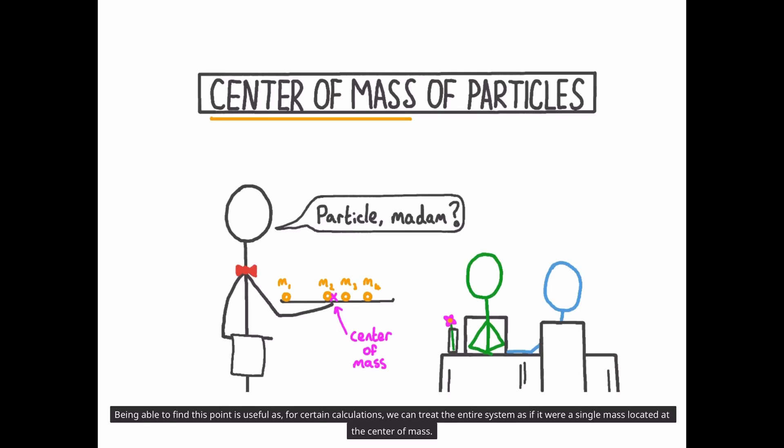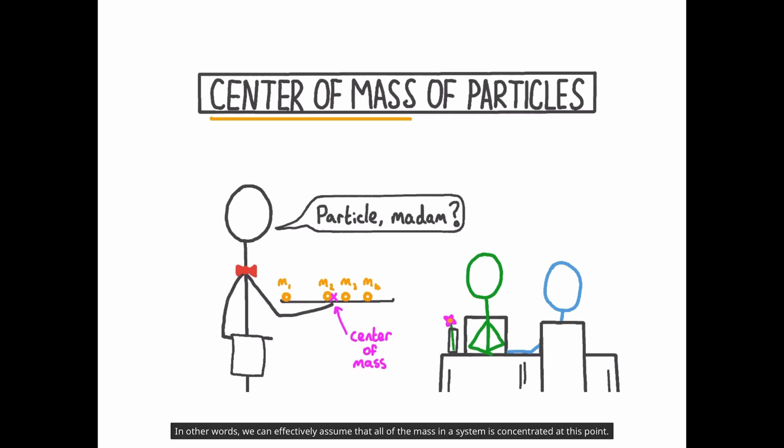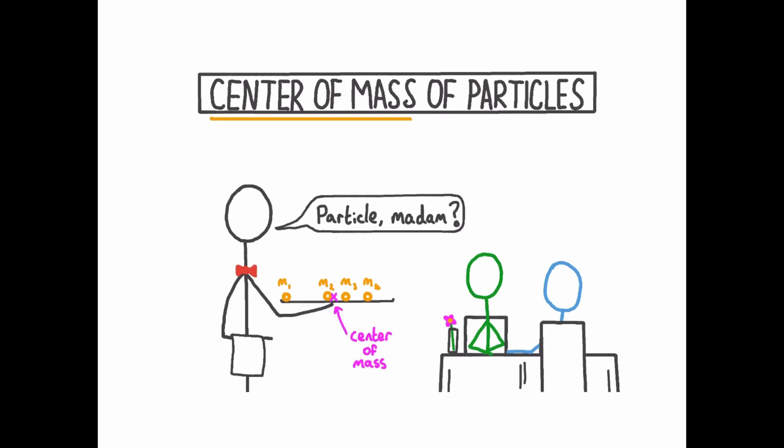Being able to find this point is useful, as for certain calculations we can treat the entire system as if it were a single mass located at the centre of mass. In other words, we can effectively assume that all of the mass in a system is concentrated at this point. We can think of the centre of mass of a system as its balance point.